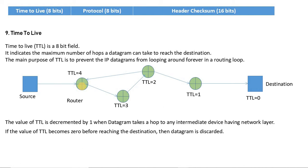And if the TTL is zero, the packet will be discarded. For example, if TTL is 5 and the packet reaches the destination router, it will not be zero — it will be, say, 1. In that case, the destination will accept the packet because the TTL number is not zero; it is greater than zero. Because there is a shortest path, and along that path the TTL value is not yet zero, so the packet will be accepted.